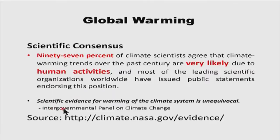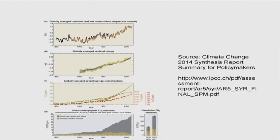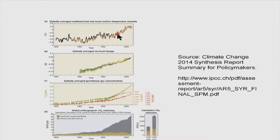Most of the leading scientific organizations worldwide, including many science academies, have issued public statements endorsing that climate change and global warming is happening. The Intergovernmental Panel on Climate Change (IPCC) says that scientific evidence of warming of the climate system is unequivocal. This figure taken from IPCC — you can go to the Climate Change 2014 Synthesis Report, and there is also a complete exhaustive report published last year updating information on climate change, solutions, and scientific knowledge.